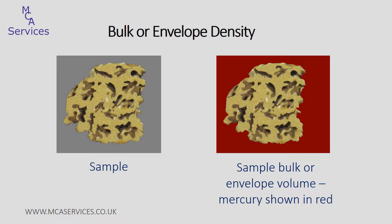Essentially the differences come down to the sample volume that's used in the calculation of density. For bulk density we measure the bulk displacement or envelope volume of the sample, and this critically includes the volume of all open pores within the sample. This is shown in the diagram on the right hand side here.